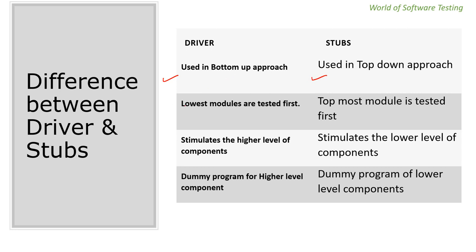The first difference: driver is used in the bottom-up approach and stubs are used in the top-down approach. In the bottom-up approach, the lowest modules are tested first because they are developed first, while top level models are under construction. In the top-down approach, the topmost model is tested first. Driver simulates the higher level components; stubs simulate the lower level components. Driver is a dummy program for higher level components; stub is a dummy program for lower level components.